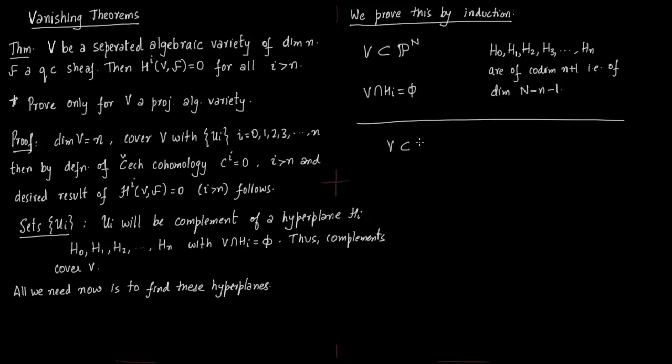Let us see this in the form of an example. Say V is of dimension 2 and it lies in this space P^5, so capital N is 5. Then we will have these three hyperplanes H_0, H_1, H_2. Again, 2 is the dimension of V. These three hyperplanes will lie in P^3. The dimension of each hyperplane is 2 and codimension is 3, as we have mentioned before. That is n+1, 2+1 equals 3, and therefore the dimension is 5-3 equals 2.